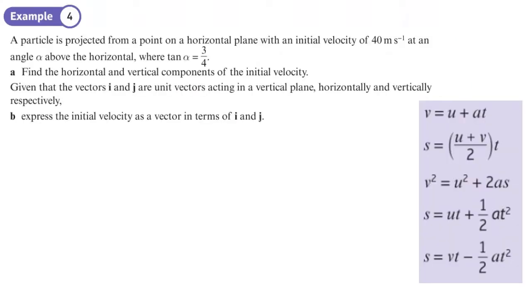First example. Here we haven't just got horizontal projection, we've got something horizontally and vertically. It's projected from a point on a horizontal plane with a velocity of 40 meters per second at an angle α above the horizontal, where the tan of α equals three quarters. Let's get our diagram going before we start doing anything. We've got this going on. It seems to come back down onto the horizontal plane there. Let's put in u and that is 40. Notice it's not just horizontal, it's 40 at an angle and that angle is α.